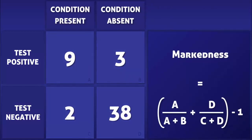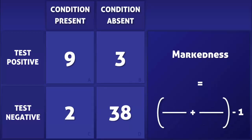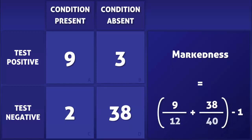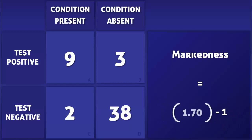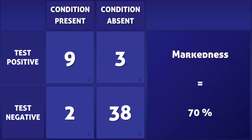In order to calculate the markedness, we need to add the positive predictive value to the negative predictive value and then subtract the sum by 1. After entering the data into the equation, we find that the markedness of the test is 0.7, or in other words, 70%.